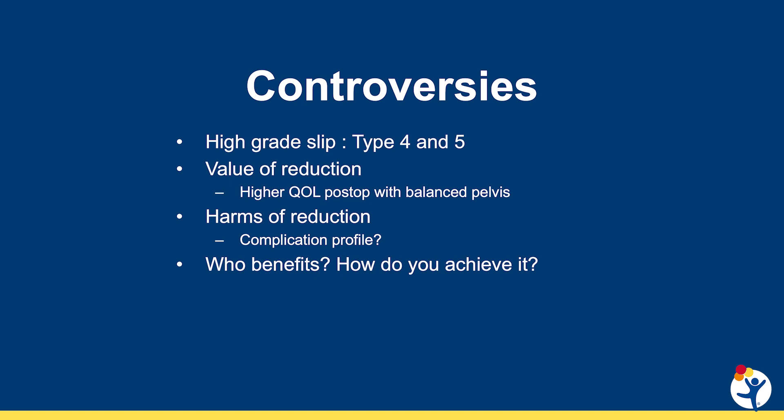The question is what to do about type 4 and type 5 slips. Some studies show a higher quality of life postoperatively if you can balance the sacral pelvis, but we also know that performing a reduction in high-grade spondylolisthesis increases the complication profile. It is also difficult to know the best surgical strategies to restore sacral pelvic balance, so these are the questions we are currently wrestling with regarding who benefits from reduction and the best technical ways to achieve this safely.